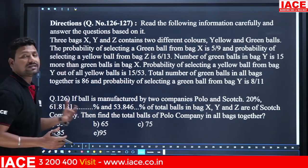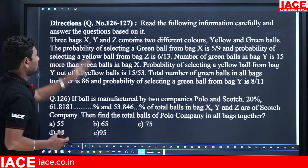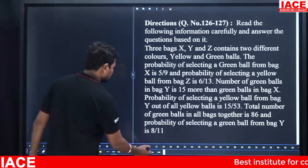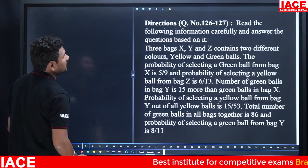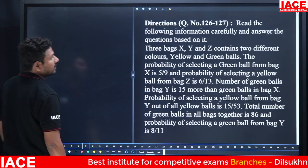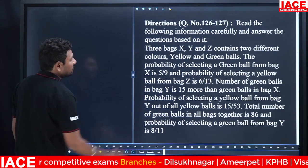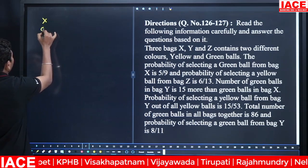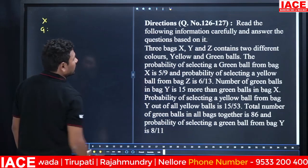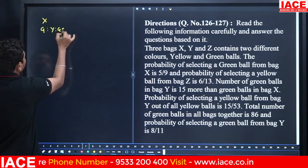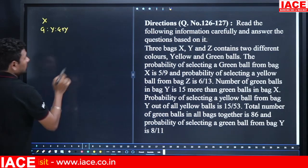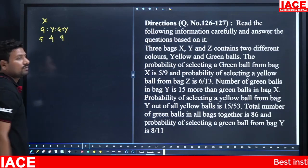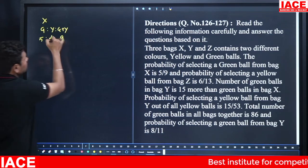Next we have a different data based on probability. Three bags X, Y, Z contain two different colors: yellow and green balls. The probability of selecting a green ball from bag X is 5/9. So green balls are 5 parts, yellow balls are 4 parts, total 9 parts. And the probability of selecting a yellow ball from bag Z is 6/13, meaning yellow = 6, green = 7, total = 13 parts.